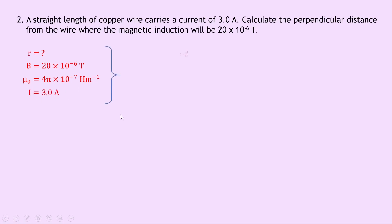So writing down our equation we have B = μ₀I / 2πr. We can now substitute in our numbers to get 20 × 10⁻⁶ = (4π × 10⁻⁷) × 3 divided by 2πr.